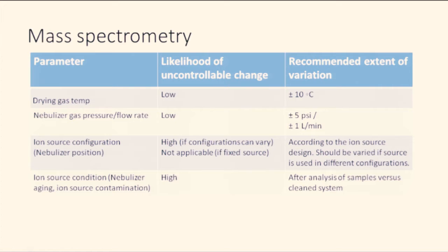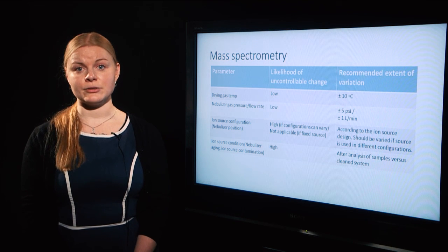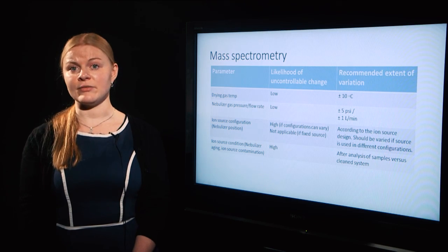Now the mass spectrometric parameters. Drying gas temperature can influence analyte ionization efficiency in the ion source. Nebulizer gas pressure and flow rate can influence analyte ionization efficiency in the ion source. Ion source configuration can influence spray and ionization efficiency in the ion source. Contamination can spontaneously accumulate when analyzing a series of samples. This was an overview of robustness and ruggedness in relation to LCMS method development and validation.